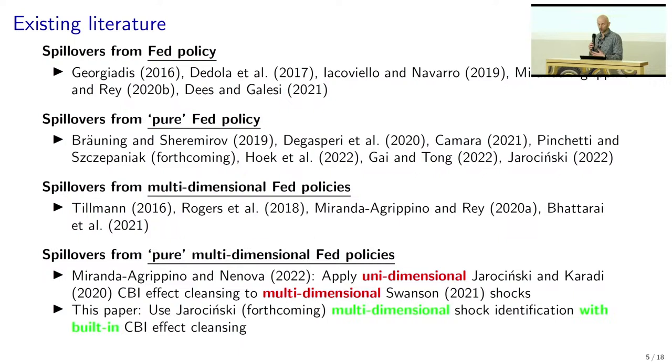Let me spend a couple of minutes on the literature to locate this paper and illustrate what we are contributing. There is a big literature. The first wave just looked at Fed spillovers to the rest of the world without accounting for central bank information effects and other residual endogenous components, and also not distinguishing between different measures. Then there was a second wave which tried to tease out these central bank information effects, looking at pure Fed policy shocks. At the same time, a literature that tried to look at different measures in the Fed's toolkit. More recently, a strand has started that tries to do both things at the same time — purify these external instruments from non-policy shock components and look at different measures in the Fed's toolkit.